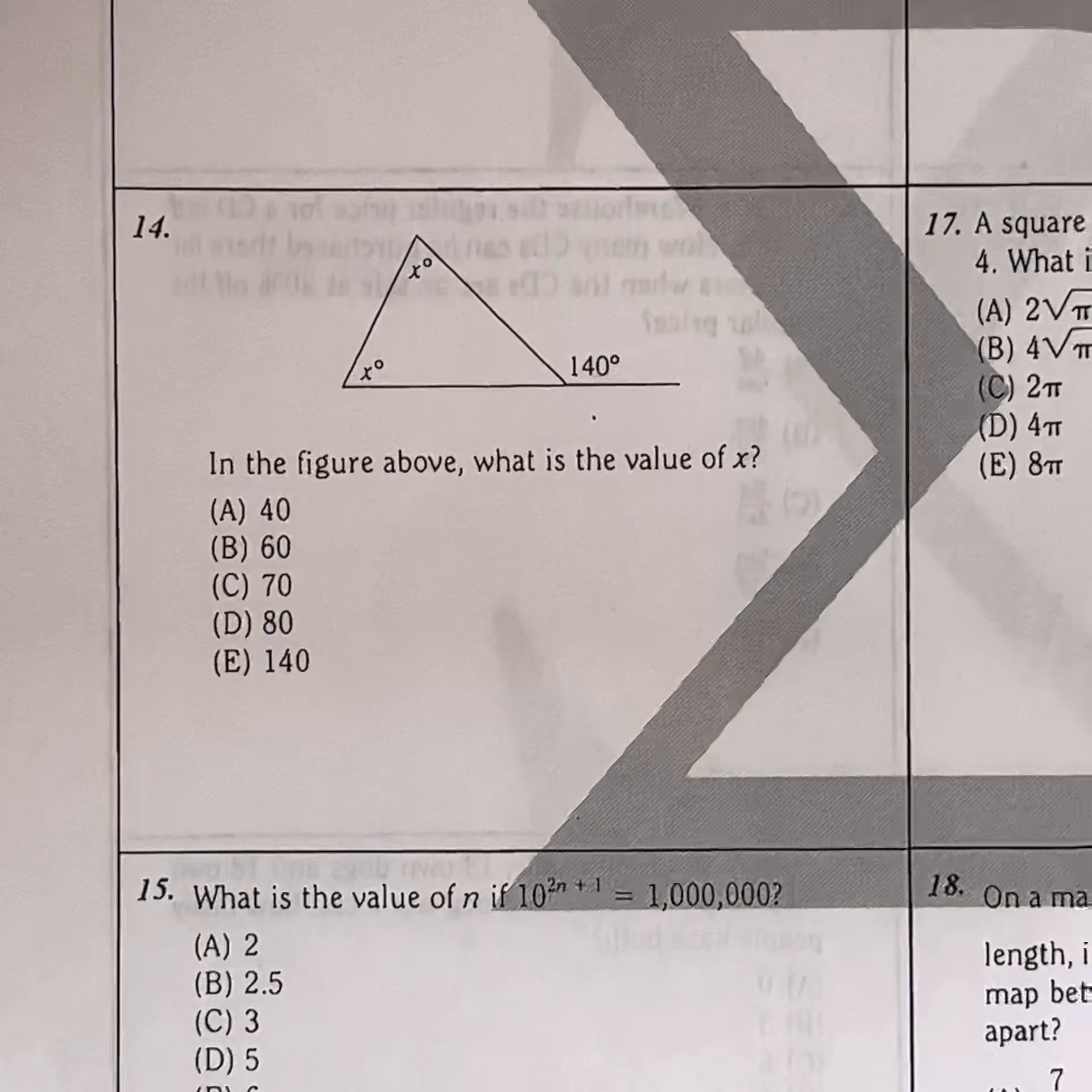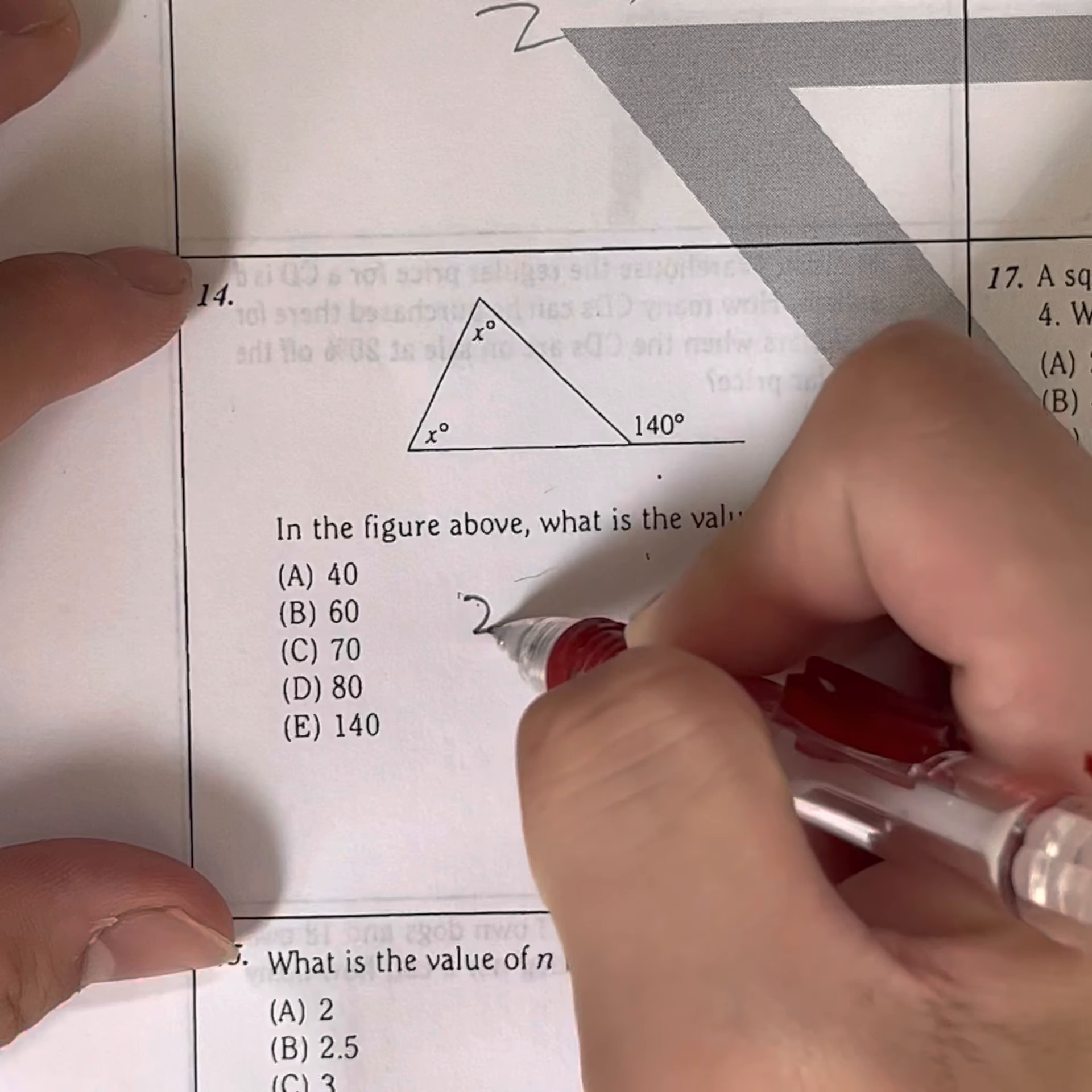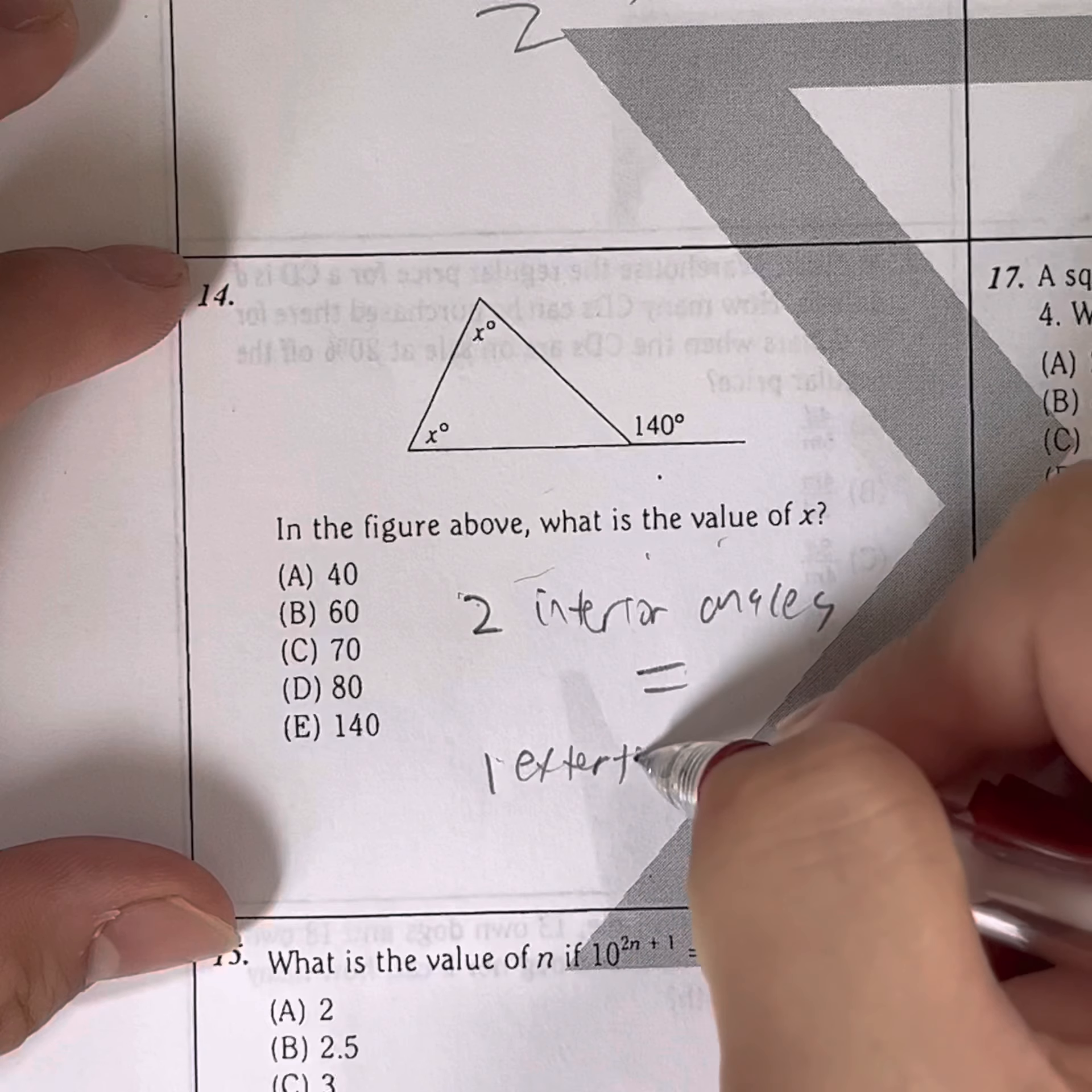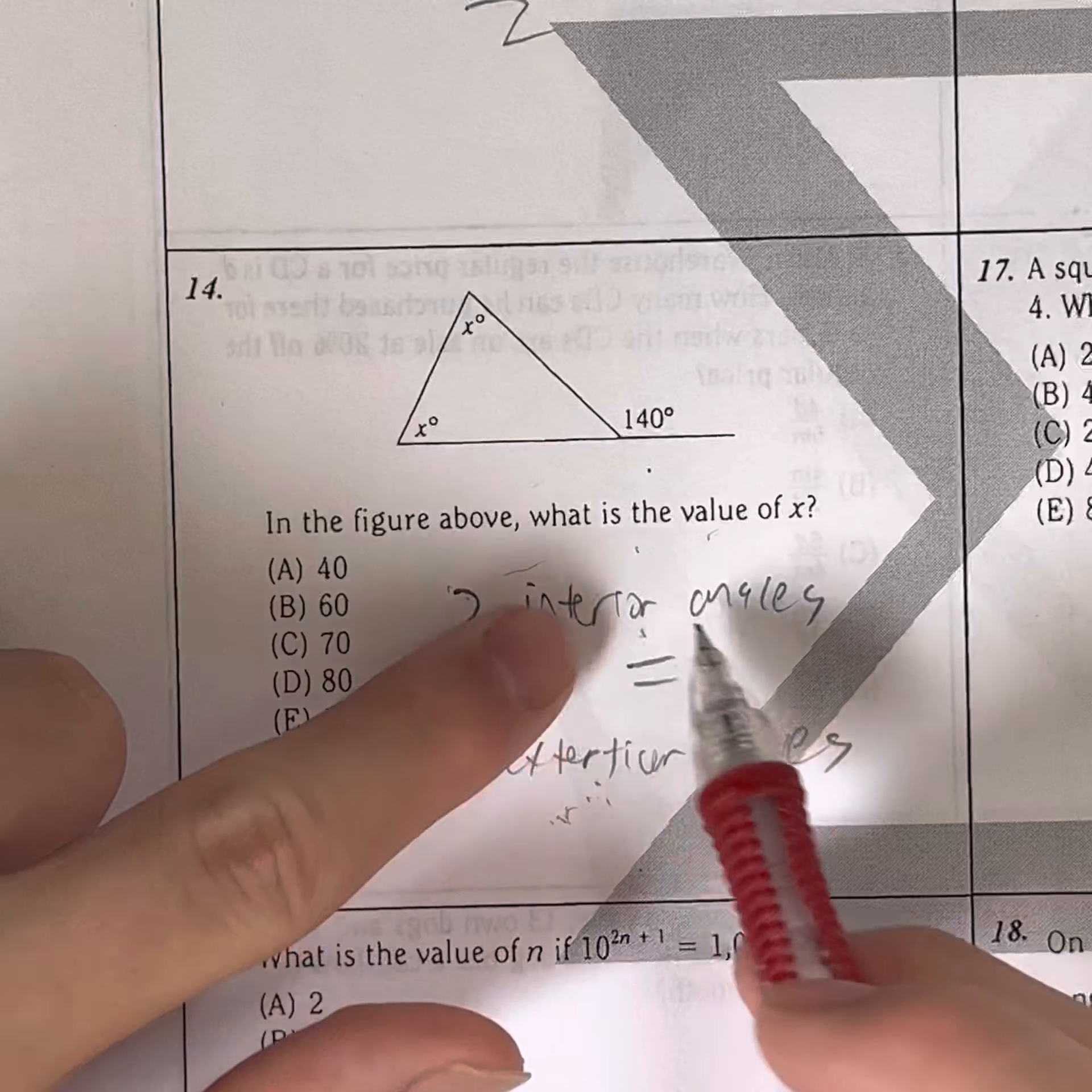So moving on, we have question 14, which is a geometric question. In the figure above, what is the value of X? So basically, you have to be able to recognize the theorem which states that the two interior angles equals one exterior angle. So basically, what does that mean? What's an exterior angle? It means the angle on the outside, as stated by exterior. And interior means angles on the inside.